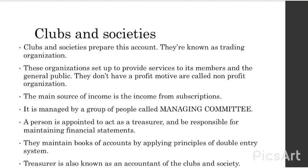A person is appointed to act as a treasurer and is responsible for maintaining financial statements. They maintain books of accounts by applying the principles of the double entry system. This treasurer acts as an accountant of the clubs and society. So in a normal business there is an accountant who takes care of the books of accounts, but in clubs and society the accountant is replaced by a treasurer. Also, the formula for accumulated fund is assets minus liabilities.